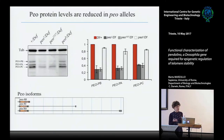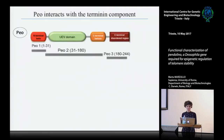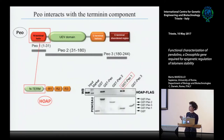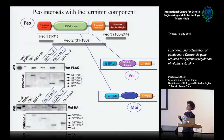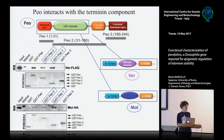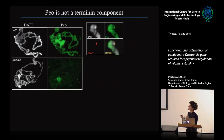Because of the particular strong fusion phenotype observed in the mutant, we started to analyze the mechanism of action of Pendolino in telomere stability. First, we tested its interaction with the terminin complex, and through GST pulldown we demonstrated that Peo interacts with HOAP through the N-terminal domain, and also with Moi and Ver through both the N-terminal domain and through the UBL domain. These results allow us to hypothesize that Pendolino could be a new component of the terminin complex.